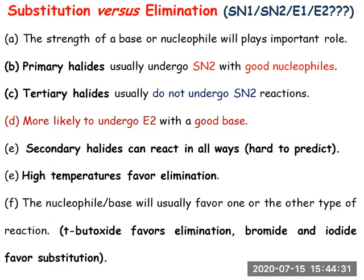Now let us compare substitution and elimination reactions. We have four mechanisms: SN1, SN2, E1, and E2 (E1cB is observed only under certain conditions). Various factors are responsible. First, the structure of the substrate: primary alkyl halides will always undergo SN2 with a good nucleophile, whereas tertiary alkyl halides will never undergo SN2 because the backside attack is sterically impossible.